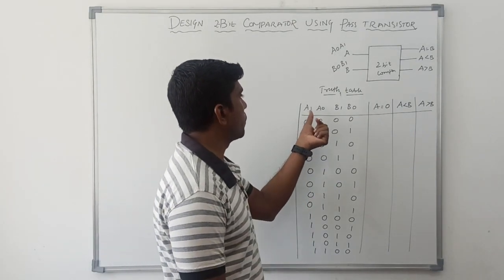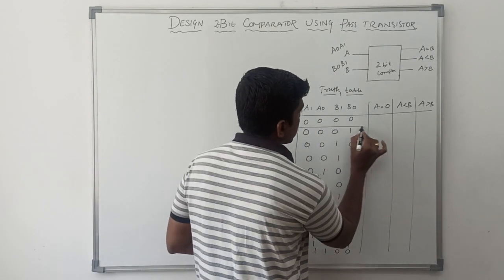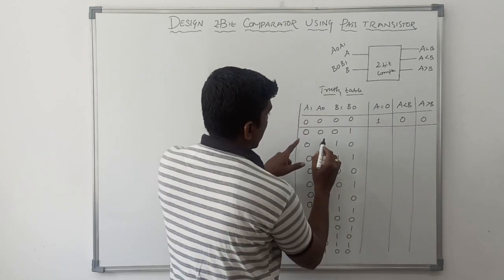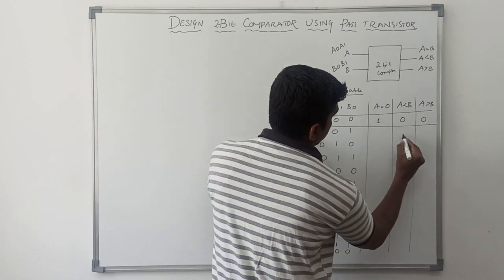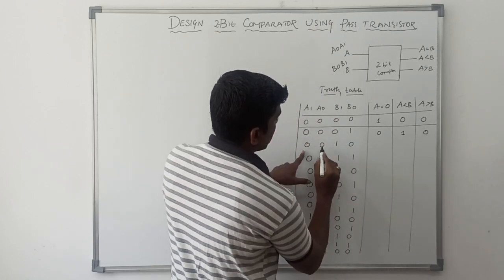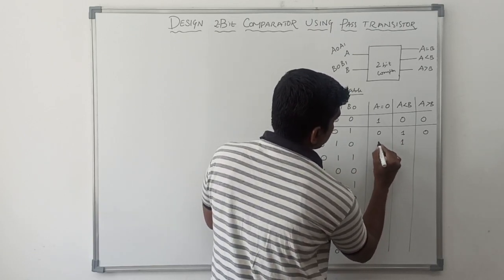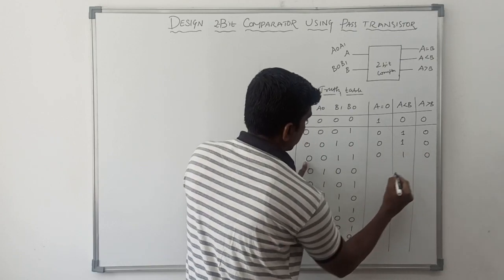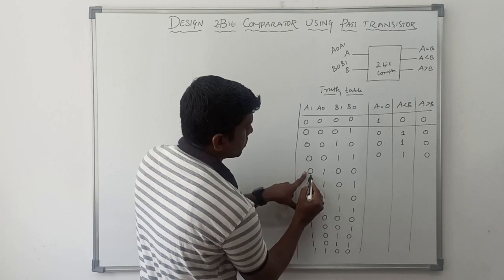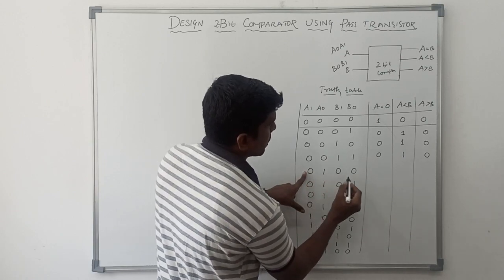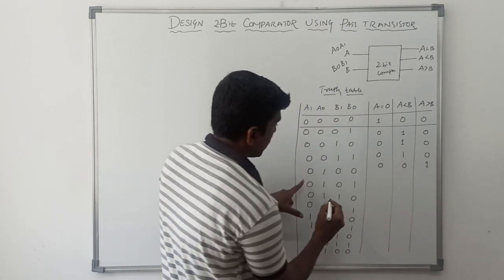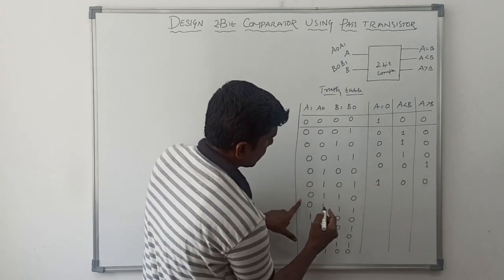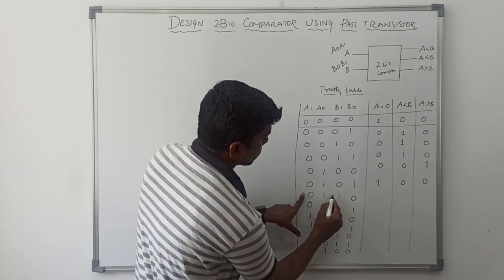Just comparing these two values — A value compared with B value. First case: A value and B value are both equal. Second case: A value is less than B. Third input: A value is less than B. Fourth input: A value is less than B. The next one: A value is greater than B — here A value is 0,1 and B value is 0,0, so A is greater than B. Then A is 0,1 and B is 0,1, so both are equal. Then A is 0,1 and B is 1,0, so A is less than B.